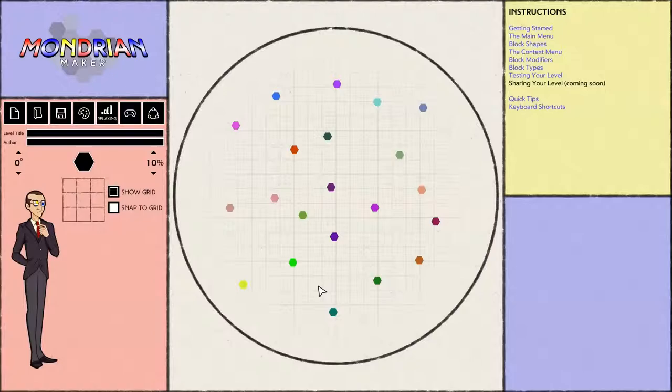So the last thing to note about the palette is the block shapes. So far we've only been using hexagons, but if we hover over the block button for just a couple seconds, you'll see we actually have five different choices. Hexagons, squares, stars, triangles, and diamonds. We can use any of these five shapes to build out our levels.